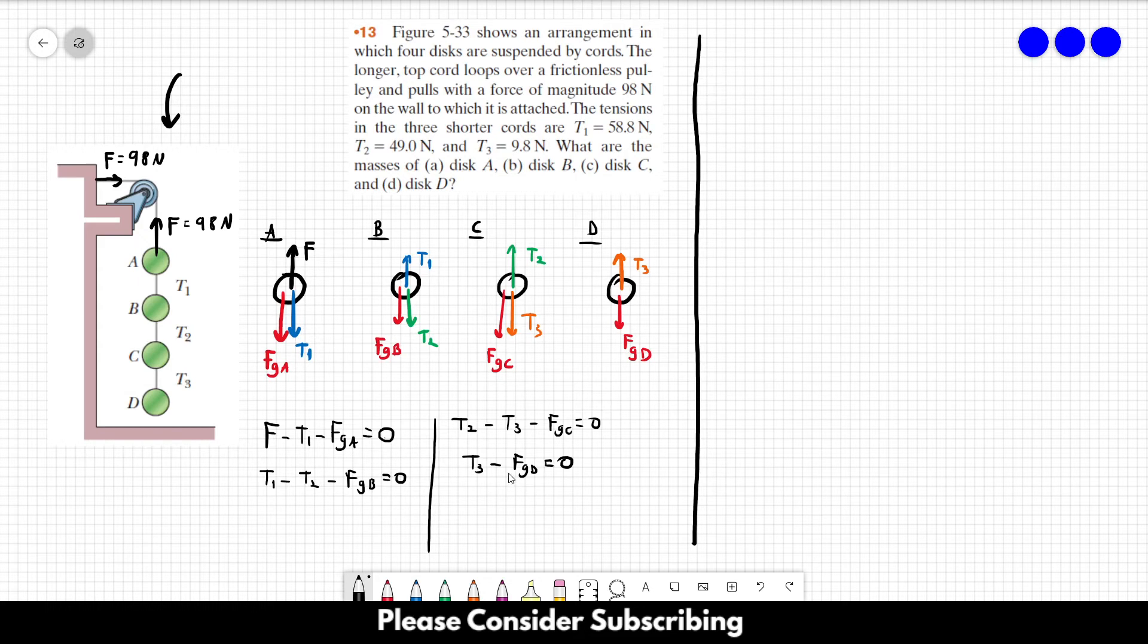Just remember that the gravitational force is mass times the acceleration of gravity. So let's work with this equation. So T3 equals mass of disc D times gravity. So MD is equal to T3 over G, which is 9.8 over 9.8, which is 1 kilogram. So the mass of disc D is 1 kilogram. This is the answer for letter D.